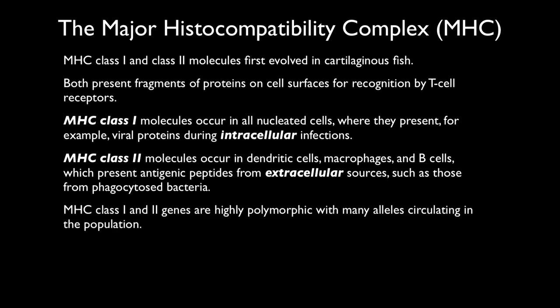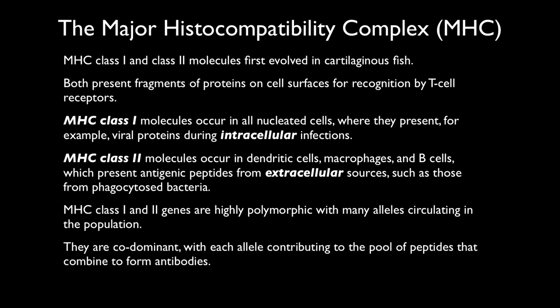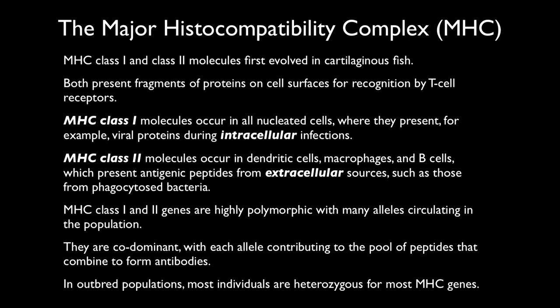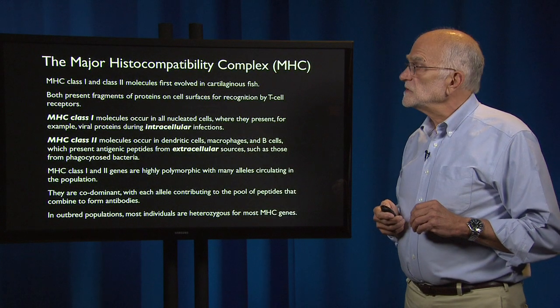MHC class I and II genes are highly polymorphic with many alleles circulating in the human population. These genes are codominant, meaning each allele contributes to the pool of peptides presented. In an outbred population, most individuals are heterozygous for most MHC genes, so most of us carry a huge library of variants that can be brought together in astronomically large combinations to deal with a huge array of proteins coming in from pathogens and other sources.